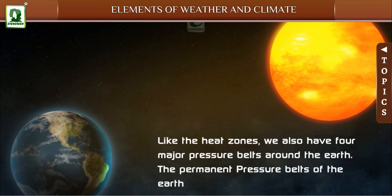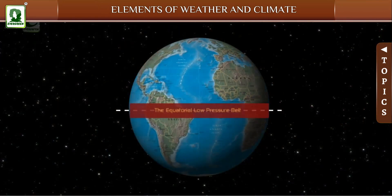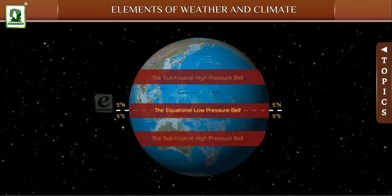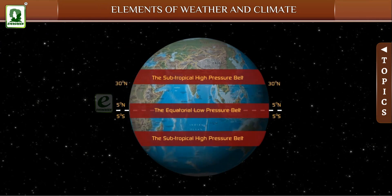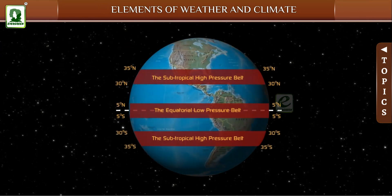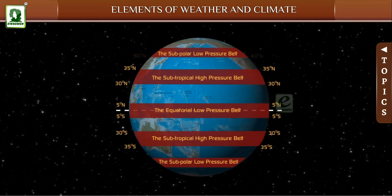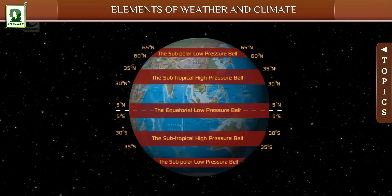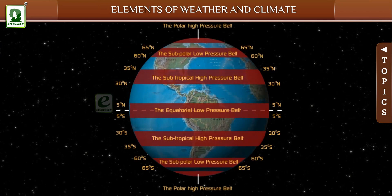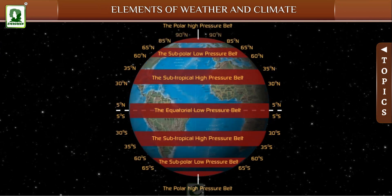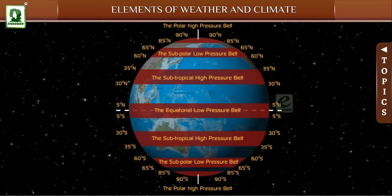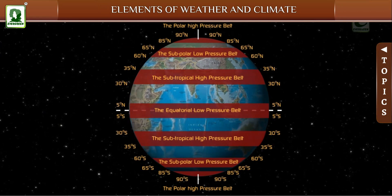The permanent pressure belts of the earth are: the equatorial low pressure belt (5°N to 5°S), the subtropical high pressure belt (30°–35° north and south), the subpolar low pressure belt (60°–65° north and south), and the polar high pressure belt (85°–90° north and south). This is a pattern of alternate high and low pressure belts over the earth.